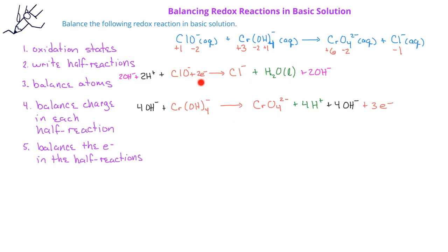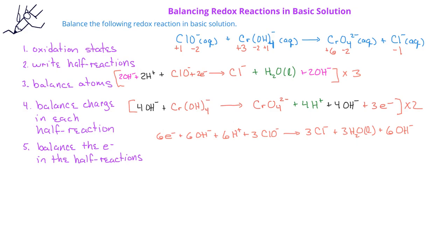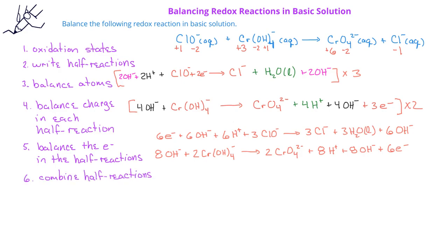Since we have two electrons in the reduction reaction and three electrons in the oxidation half reaction, we multiply each half reaction by the number of electrons in the opposite half reaction. This gives us, for the reduction half reaction: six electrons plus six hydroxide ions plus six hydrogen ions plus three ClO⁻ producing three chloride ions plus three water molecules plus six hydroxide ions. For the oxidation half reaction: eight hydroxide ions plus two Cr(OH)₄⁻ ions producing two chromate ions, eight hydrogen ions, eight hydroxide ions, and six electrons.